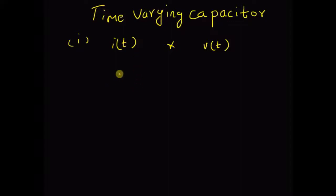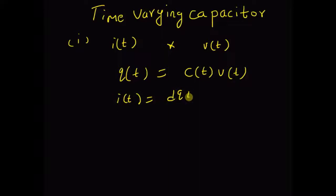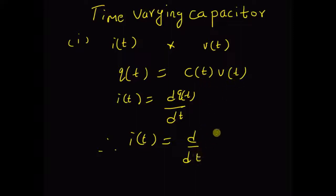For a time-varying capacitor, the relation between the charge q(t) and the voltage v(t) is given by C(t) times v(t). That is, the capacitance is a time-varying quantity, so the charge equals the product of C(t) and v(t). We know that the current i(t) is the derivative of the charge, and therefore the relation between i(t) and the voltage is given by the derivative of this product.